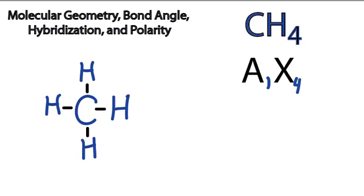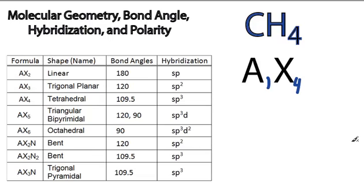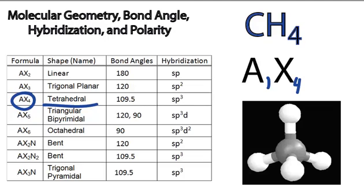Once we have this AX4, we can then look on a table to find the molecular geometry. So we go down AX2, AX3, there's AX4, and it's tetrahedral. So the molecular geometry of CH4 is going to be tetrahedral. And that's going to look like this right here.